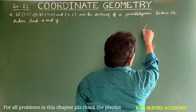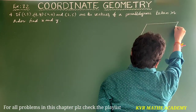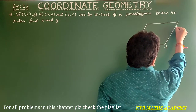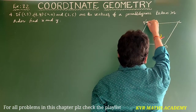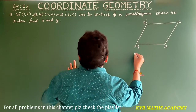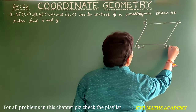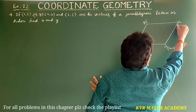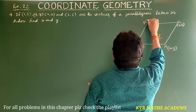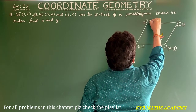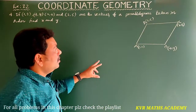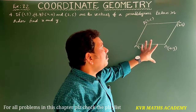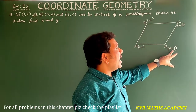First, draw the parallelogram. Suppose this is the parallelogram A, B, C, D. Let us take A as (1, 2), B as (4, y), C as (x, 6), and D as (3, 5). These are the vertices of the parallelogram taken in order. We have to find the values of x and y.